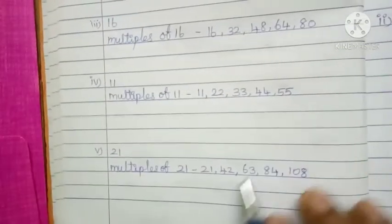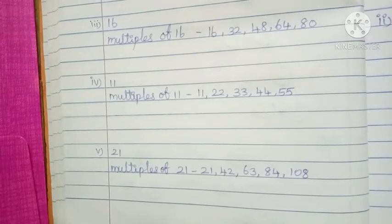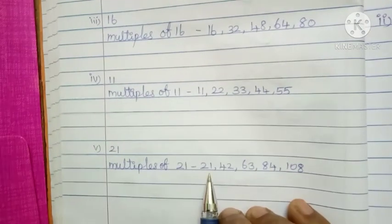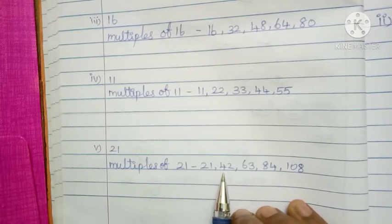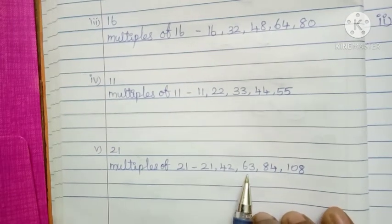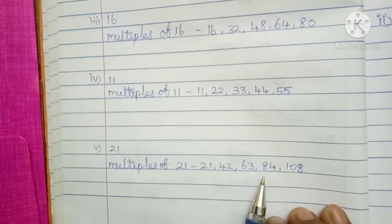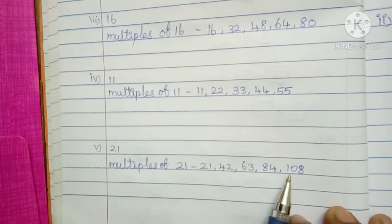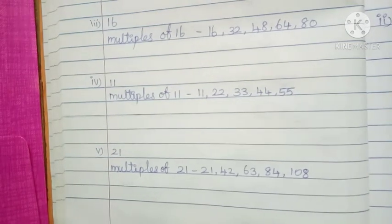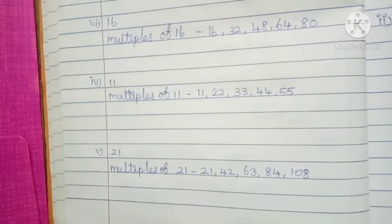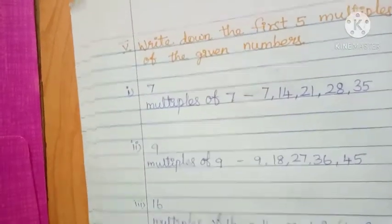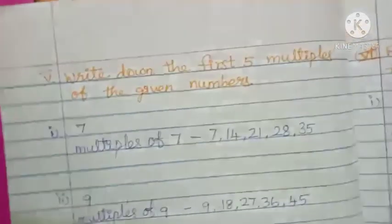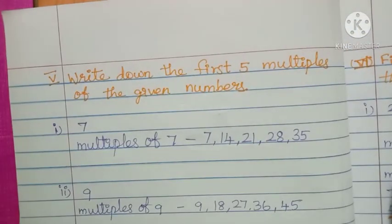Then the last one, number 21 — easy to do by skip counting, add and write. 21, 21 plus 21 is 42, 42 plus 21 is 63, 63 plus 21 is 84, 84 plus 21 is 105. Otherwise you learn the tables, children. This is for the first 5 multiples.